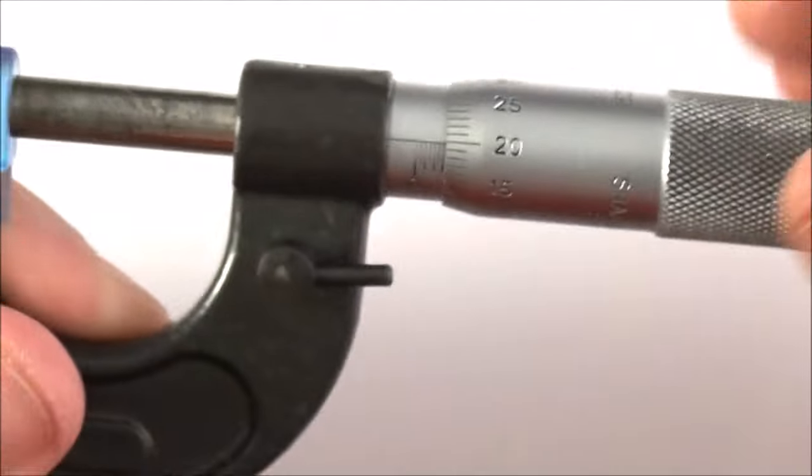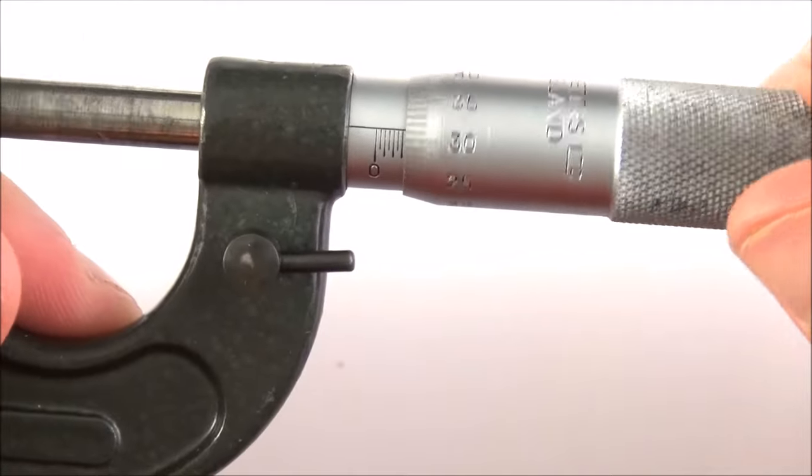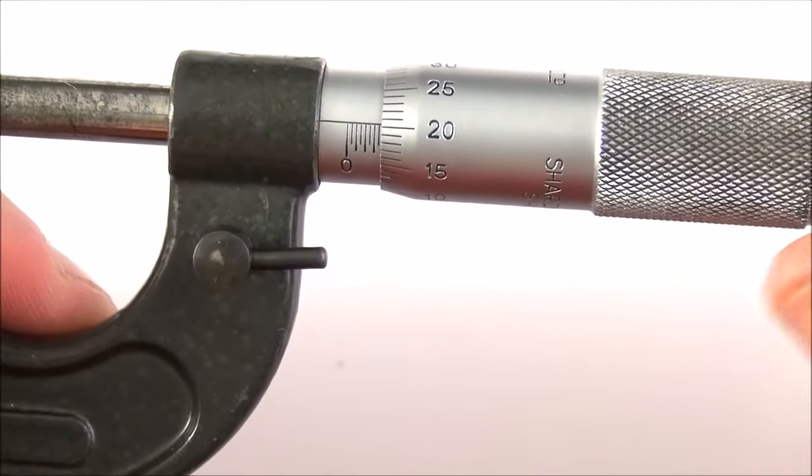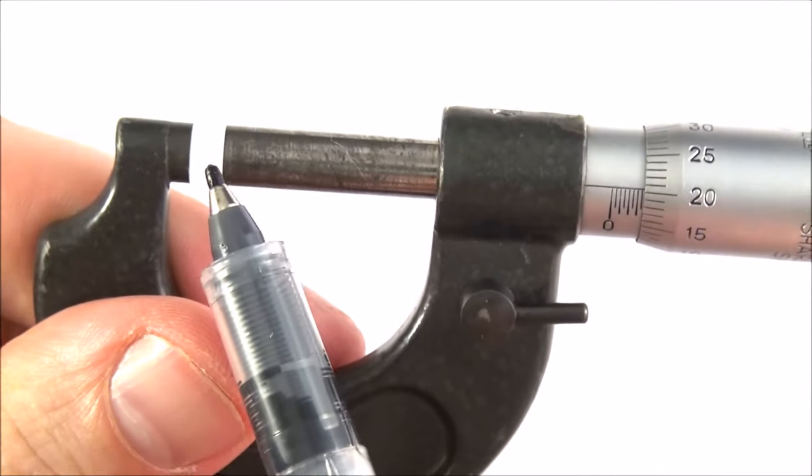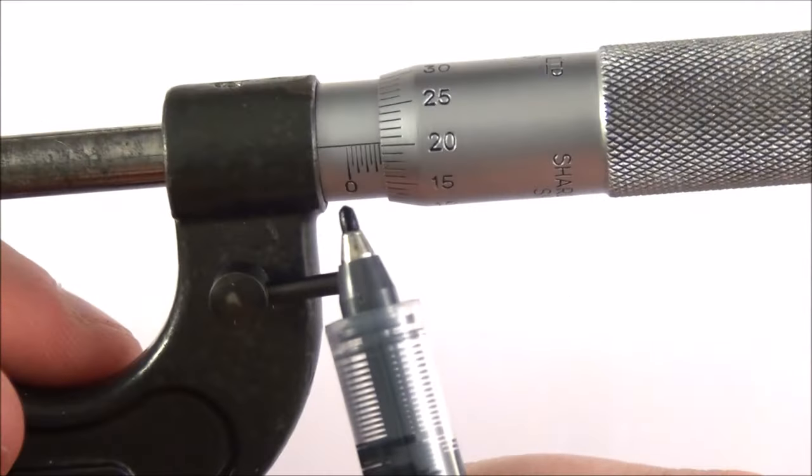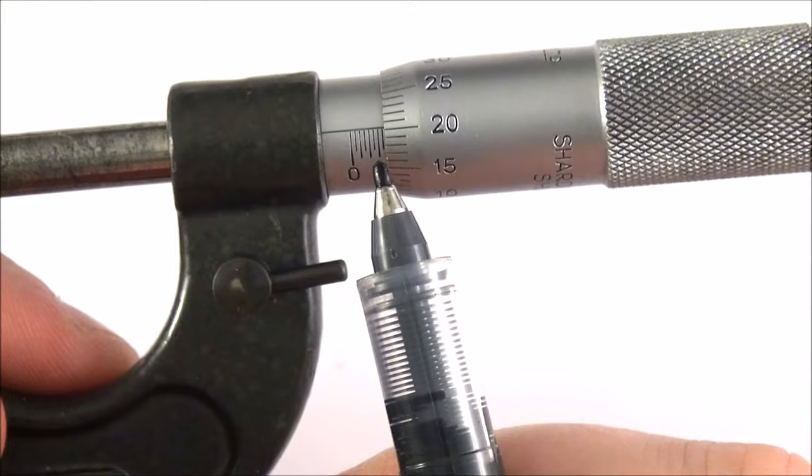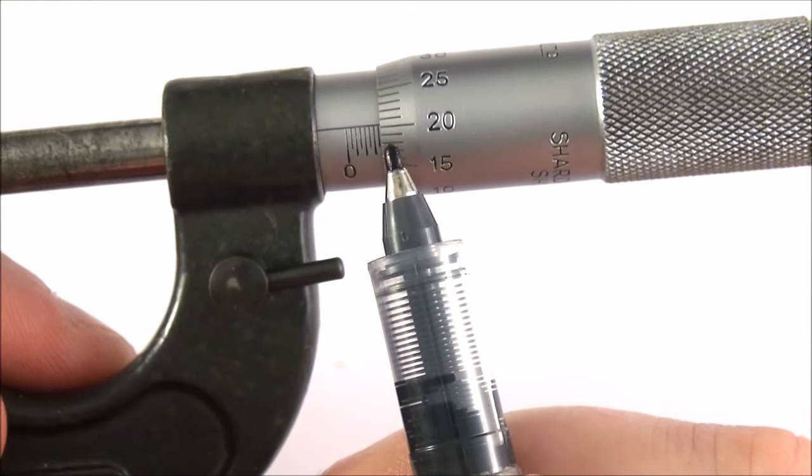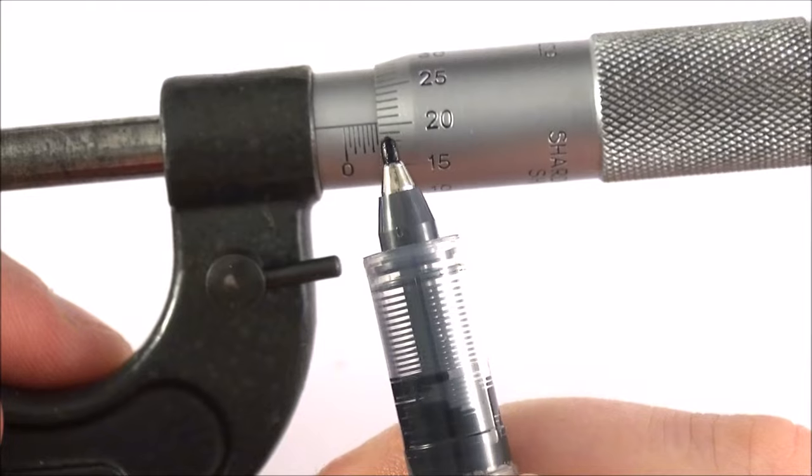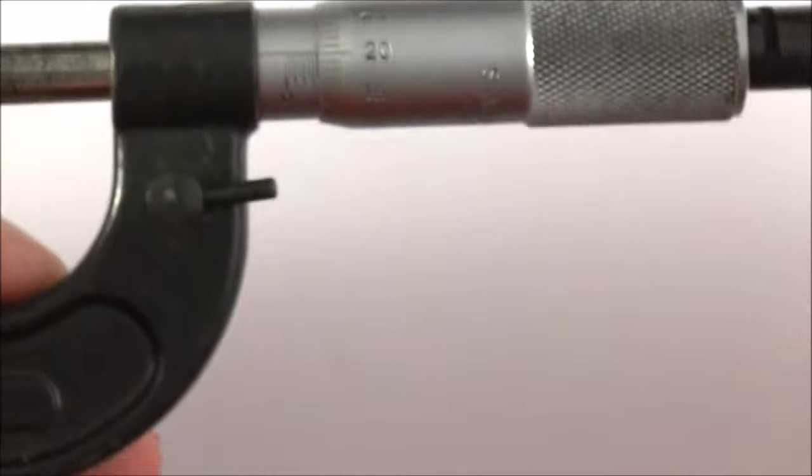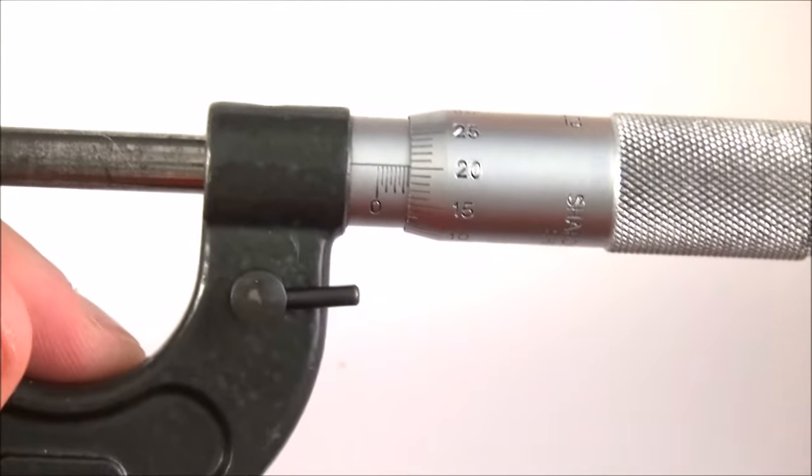If we were to take it out by one full rotation, that means this has moved out by another half millimeter. Now this is reading three, then you have the half division, and then 0.20, so this would be equal to 3.70 millimeters.